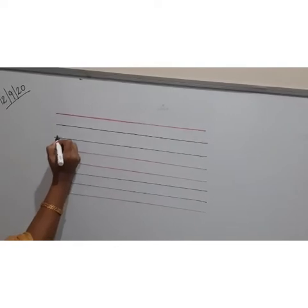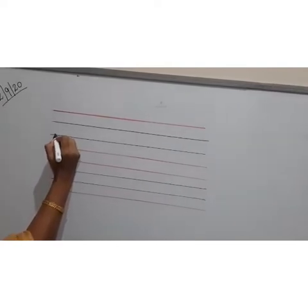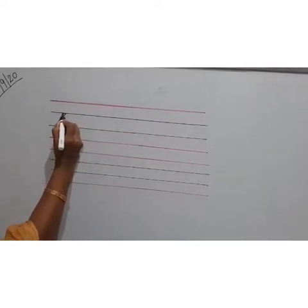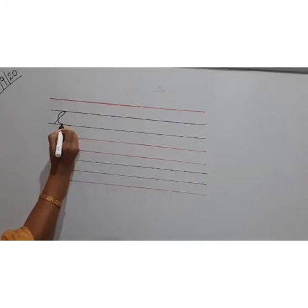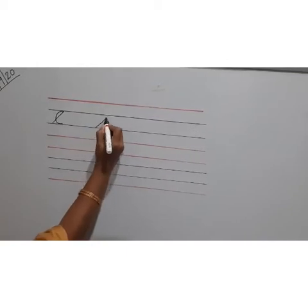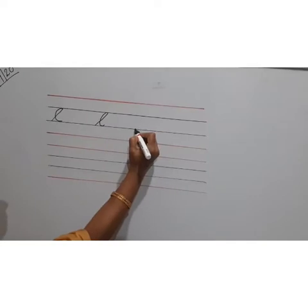So we will write small e. First we begin from this line. Make a slanting line and you have to turn like C. This becomes your E. This is small e.